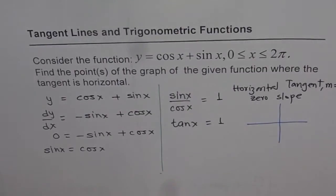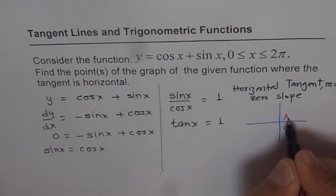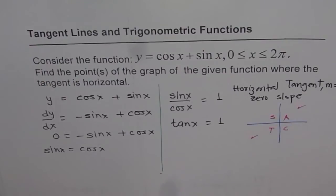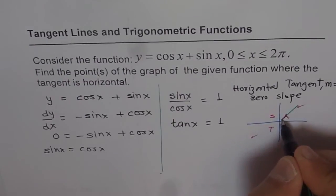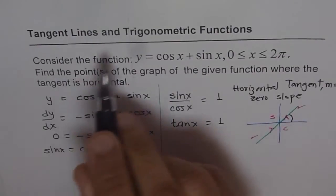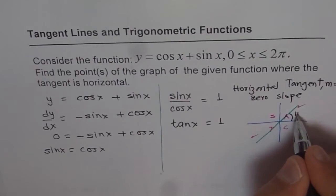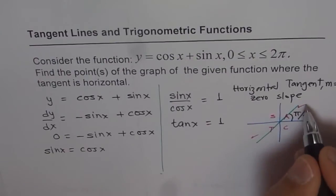So tan x, if you know the CAST rule, that helps. It is positive in these two quadrants. And equal to 1 means we're talking about 45 degrees angle. Now we're talking about limits trigonometry calculus, so it has to be in radians. So it is π/4. That is one angle, which is in quadrant 1.